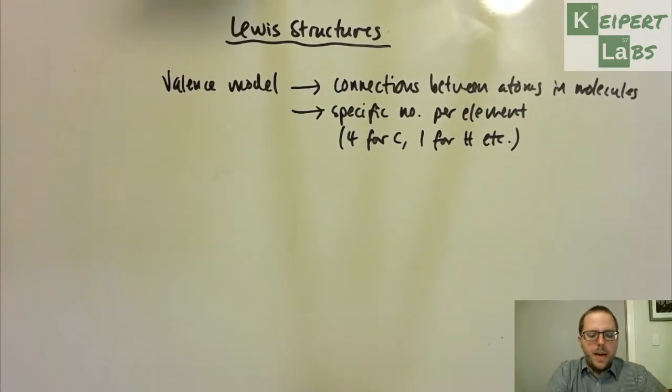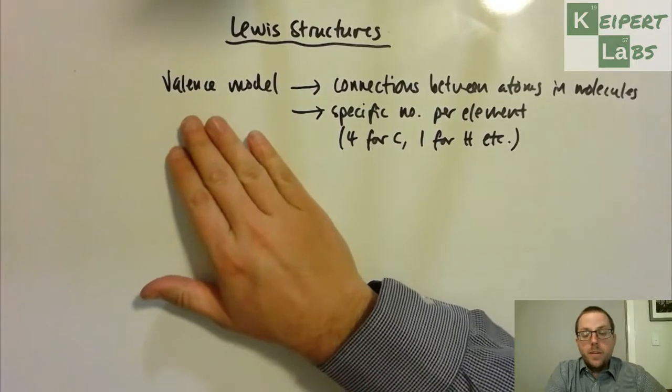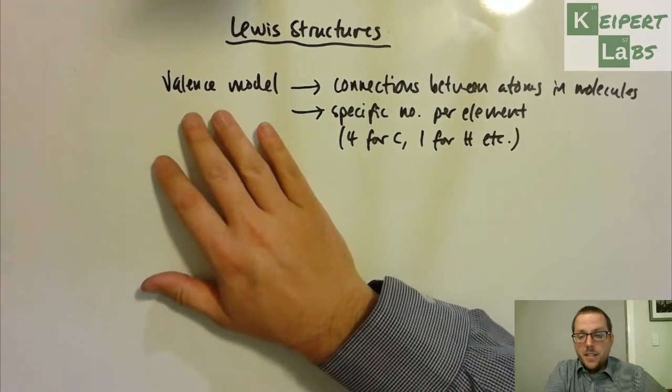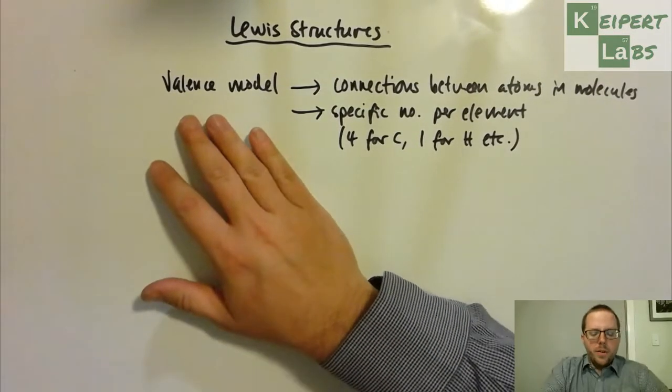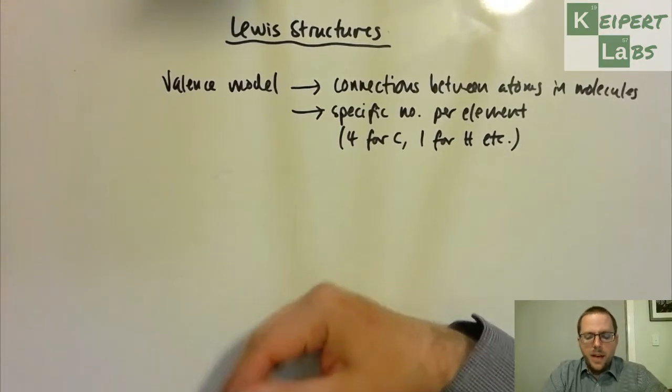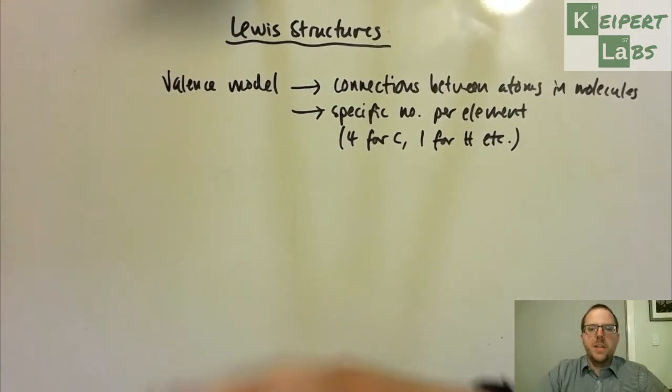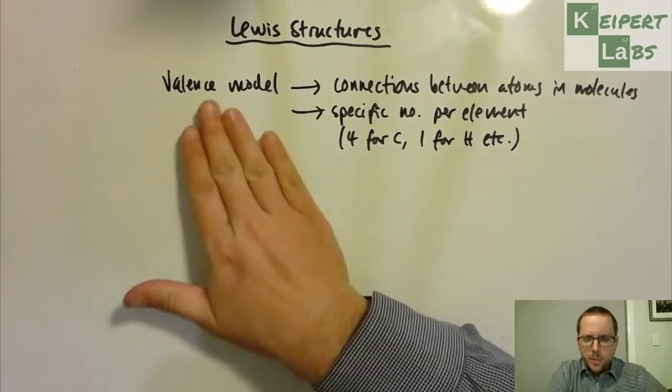So far the model we've been working with, this valence model of bonding, which was actually developed around the 1860s, even though our atomic model has progressed further than that. At the moment our understanding of how molecules connect is still working with this idea.